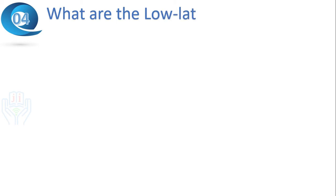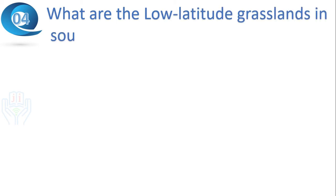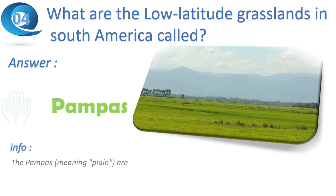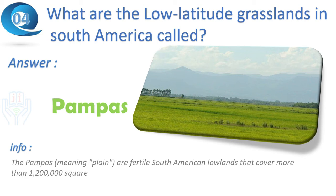Next question: what are the low-latitude grasslands in South America called? Answer: Pampas. The Pampas is a fertile South American lowland that covers more than 750,000 square kilometers.